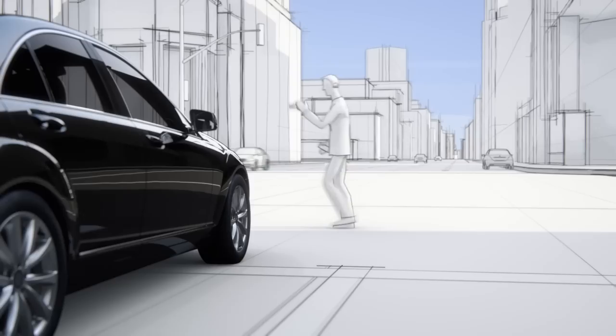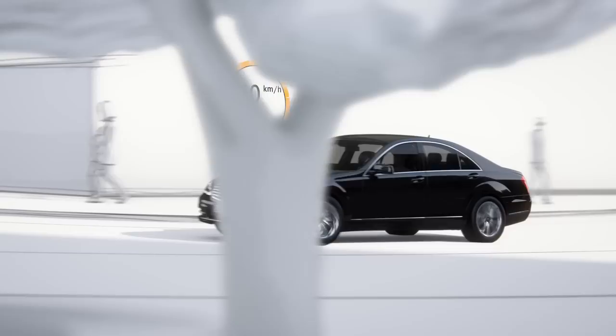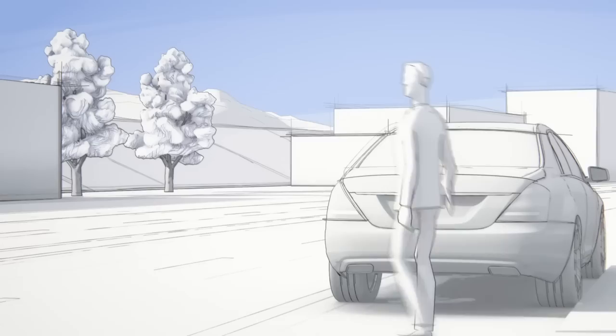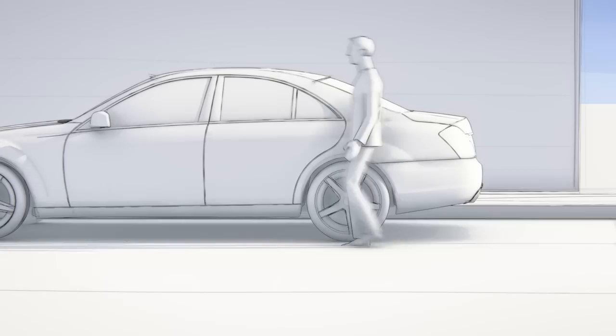The PreSafe Brake with pedestrian recognition can prevent collisions with people at speeds of over 50 km per hour. Moreover, the severity of an accident can be reduced significantly at up to 72 km per hour.